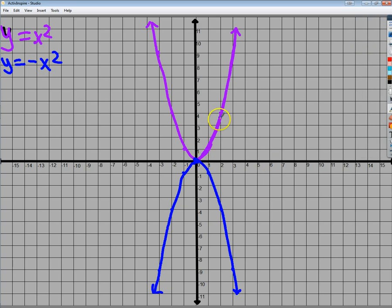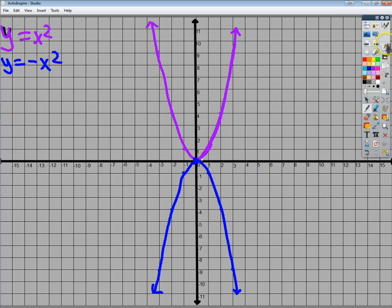I should say that instead of having a minimum value like the purple one did, x squared, the negative x squared actually has a maximum value. So anytime you see a negative in front of the coefficient of x squared or your A term is negative, you need to make sure that it's facing downwards instead of up.